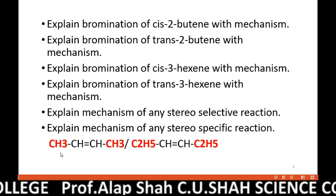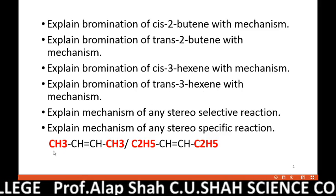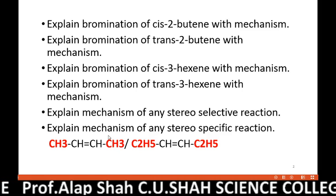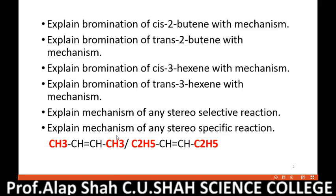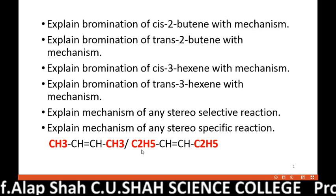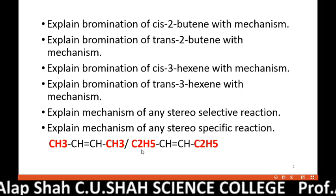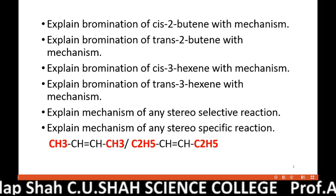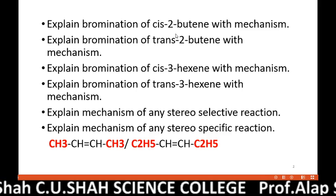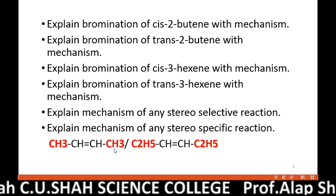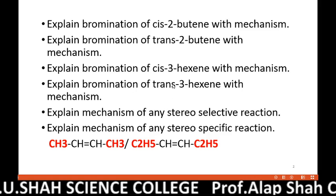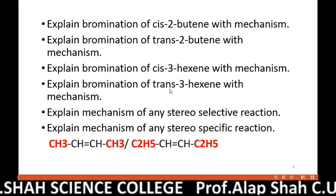You can see here the structural formula of 2-butene. I have written methyl groups in red color. Instead of methyl groups, if you put ethyl groups, the same structure converts into 3-hexene. So if you prepare the answer for cis-2-butene and wherever there is a methyl group, just change it to ethyl and your answer converts into cis-3-hexene or trans-3-hexene.